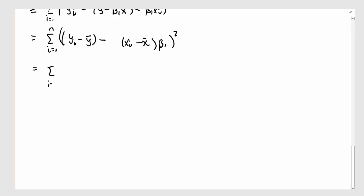This is summation i equal 1 to n, y tilde minus x tilde i, in both cases, times beta 1 squared.